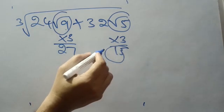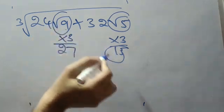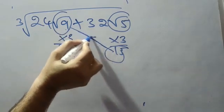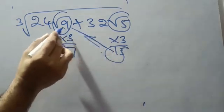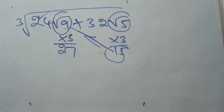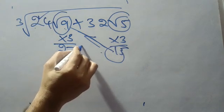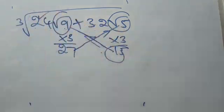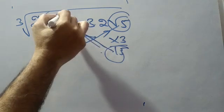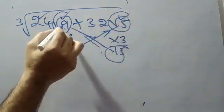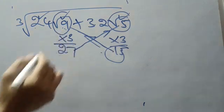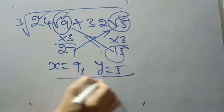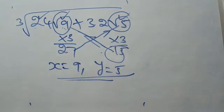Now this condition has to be satisfied: take 15 and 9 — 15 plus 9 is 24, which is satisfied. Then take 27 and 5 — 27 plus 5 equals 32, which is also satisfied. Hence, you can write down these values: x = 9 and y = 5. These are the values to find the cube root.